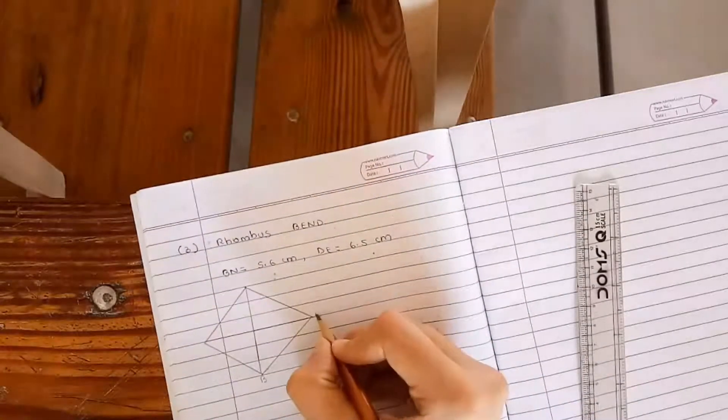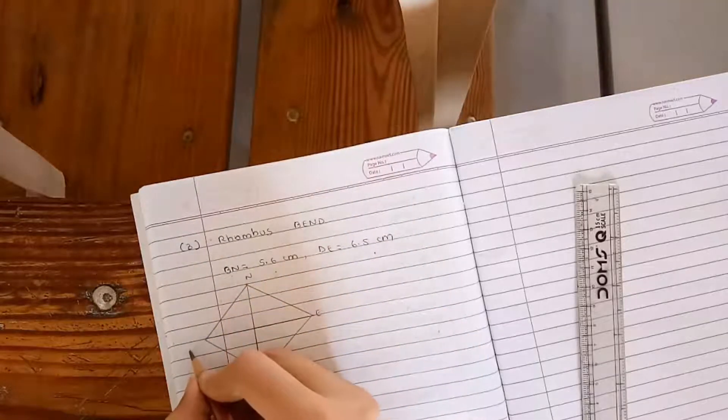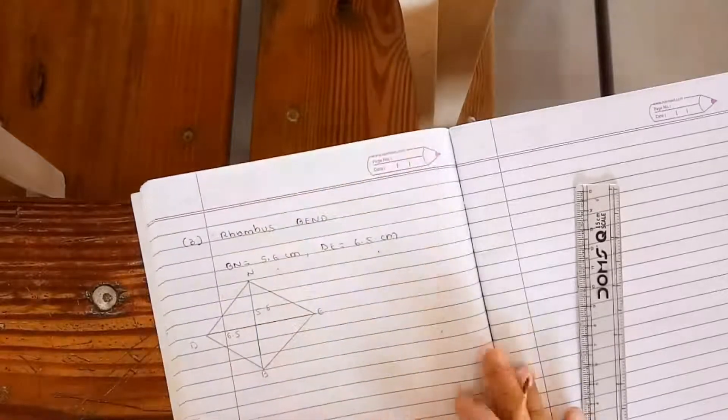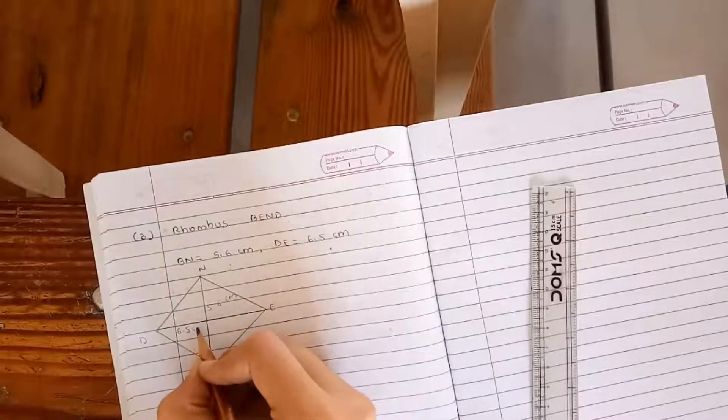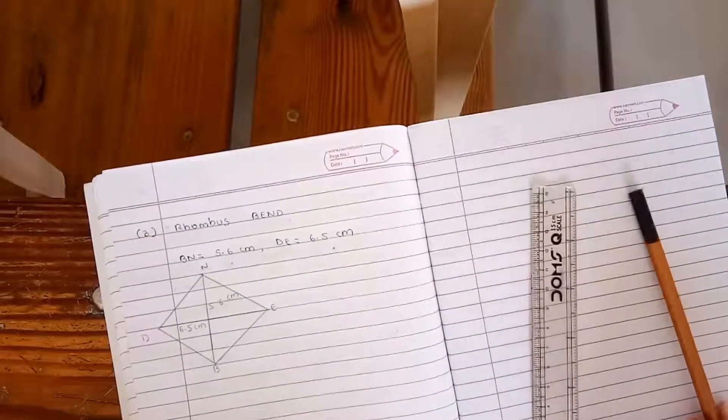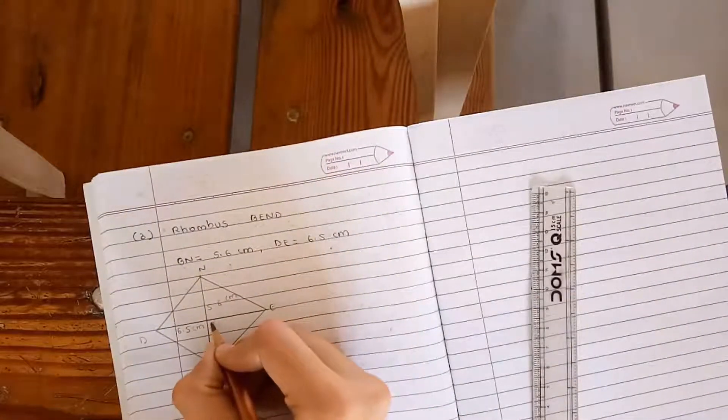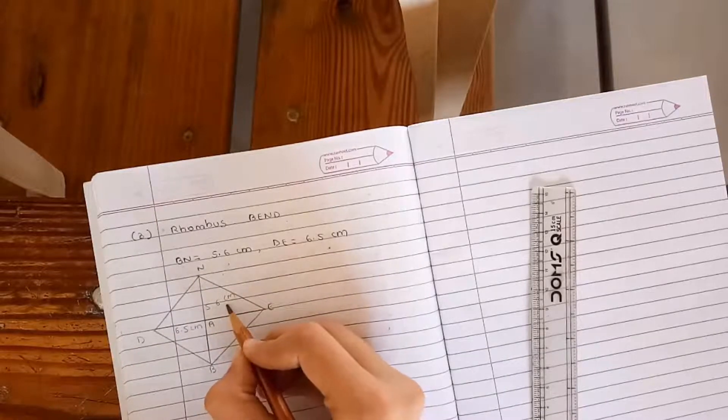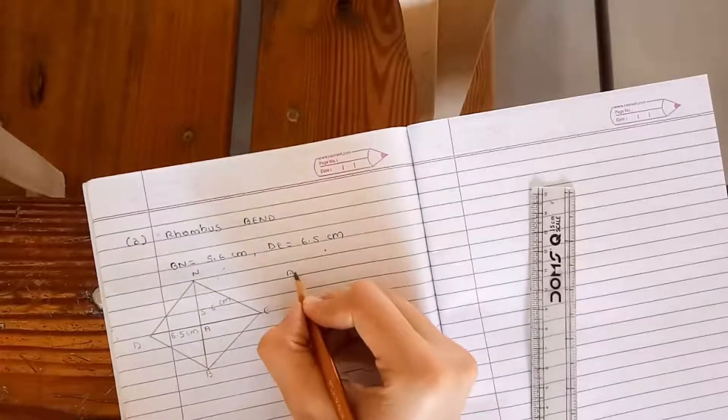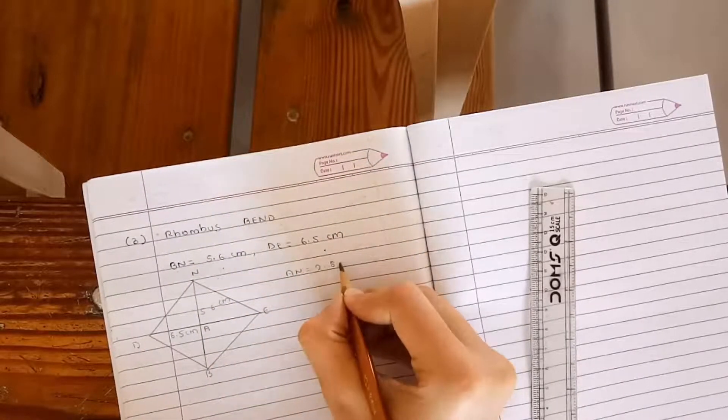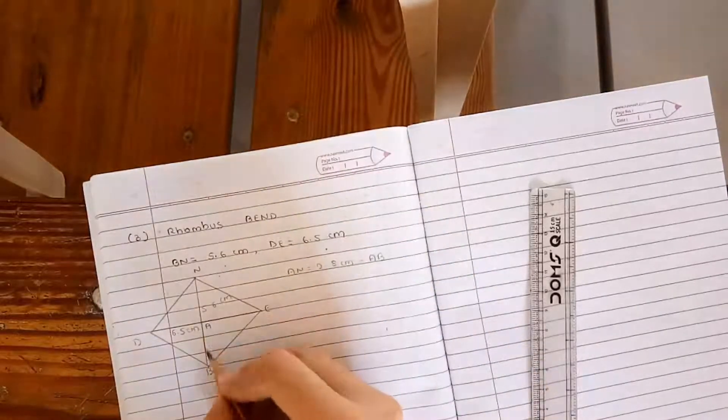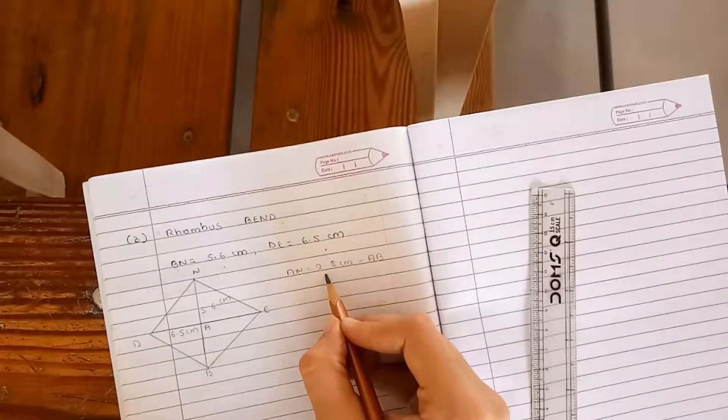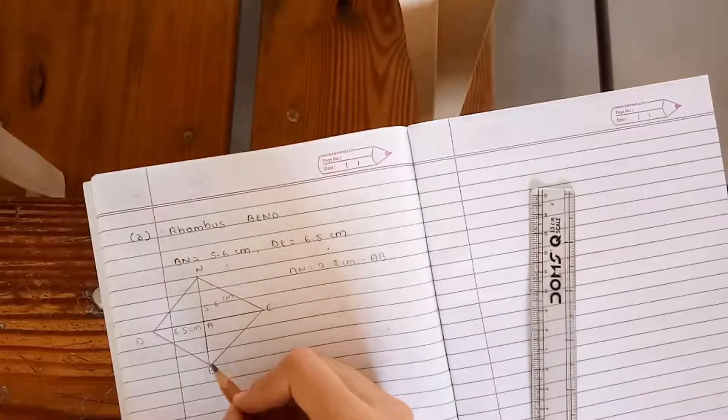B, E, N, D. D, E is 6.5 cm and B, E is 5.6 cm. So if we point this as A, so A, N will be half of 5.6, that is 2.8 cm is equal to A, B. A, B will also be equal to A, N, that is 2.8 cm. Now B, N will be 5.6 cm.